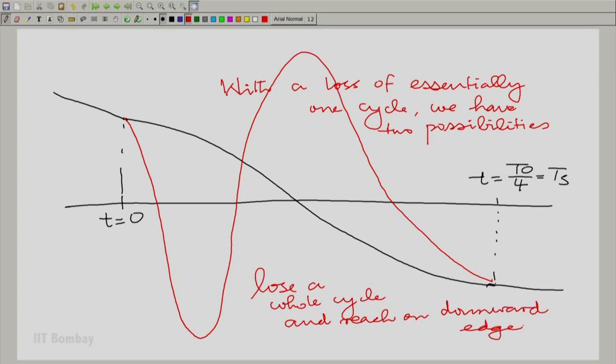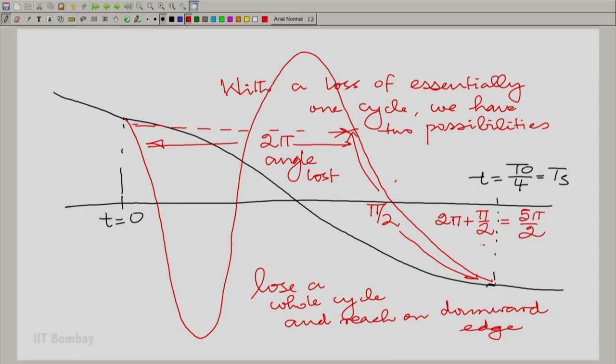So, I go all the way, I lose the whole cycle and then I reach here on the downward edge. So, how much of angle have we lost in one sampling interval here, let us calculate it. Forgive my drawing, it is only approximate, but the idea is if I were to draw a parallel here like this and mark this point, then one is losing an angle of complete 2 pi here, 2 pi angle lost and then of course, there is a pi by 2 here. So, for the red possibility, you are talking about 2 pi plus pi by 2 angle lost in a sampling interval, which is 5 pi by 2 angle in the sampling interval T s.